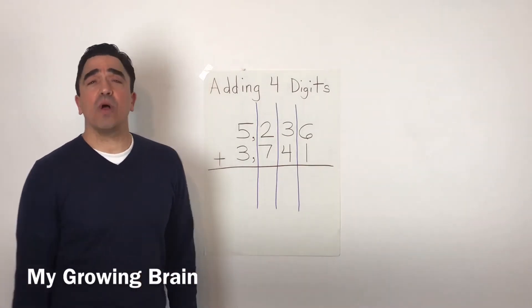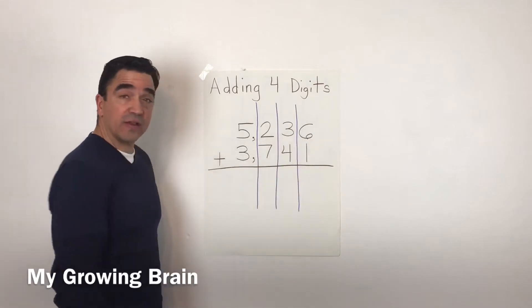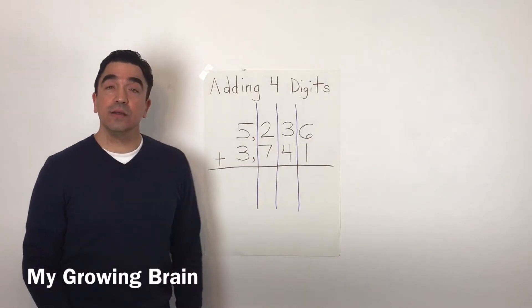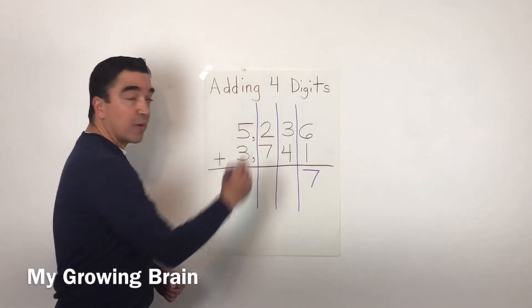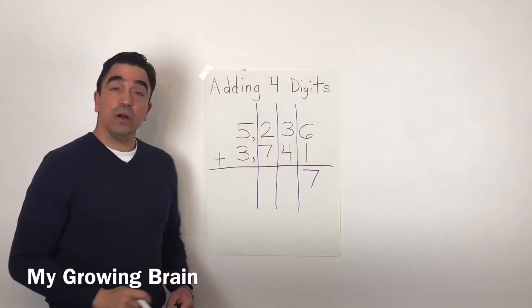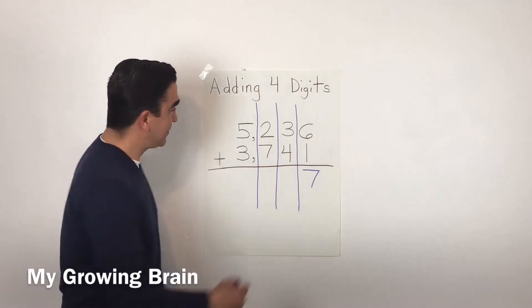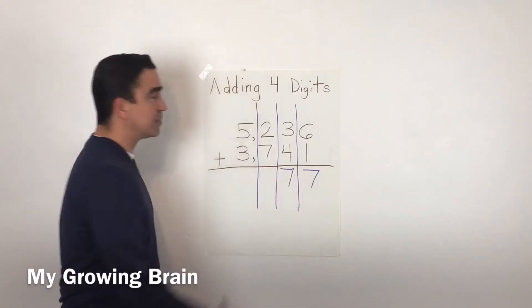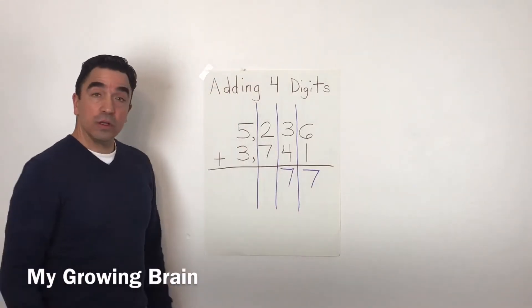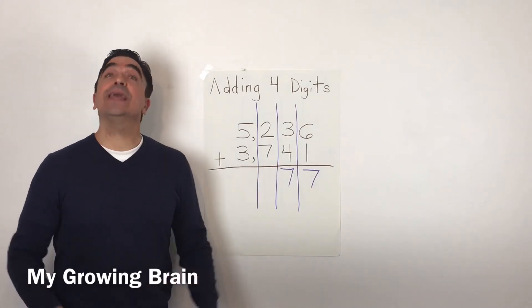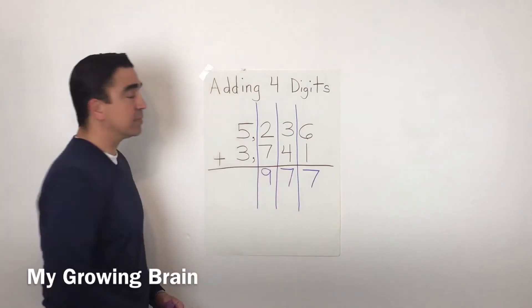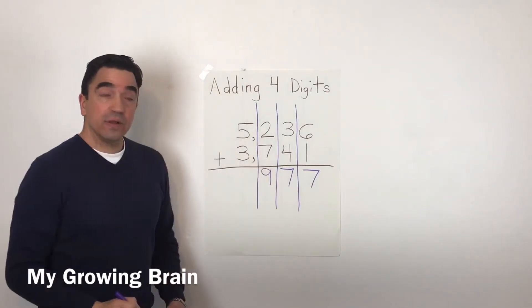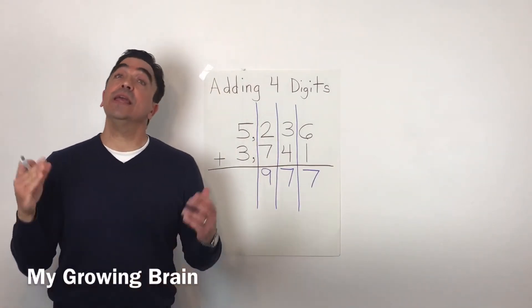Let's start in the ones place. 6 plus 1 equals 7. 3 plus 4 equals 7. 2 plus 7 equals 9. 5 plus 3 equals 8.